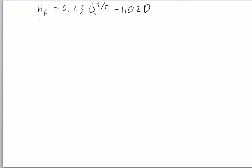So we have flame height here, HF for heat release rate, Q dot here, and diameter of the pool here. It's just a simple algebraic manipulation.